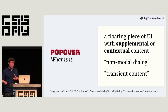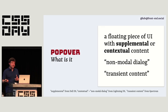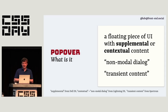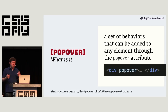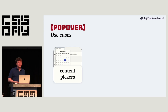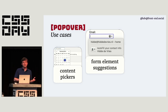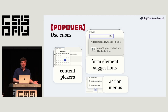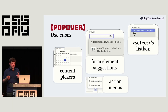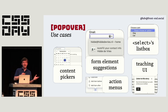Popovers are a floating piece of UI with supplemental or contextual content. Some design systems call it a non-modal dialog or transient content. The popover attribute gives you a set of behaviors you can add. You can build content pickers like emoji pickers, color pickers, or date pickers. Form element suggestions such as combo boxes or autocomplete. Action menus for applications. The list box of a select element. And also teaching UI — showing users a new feature. These are all use cases for popover.